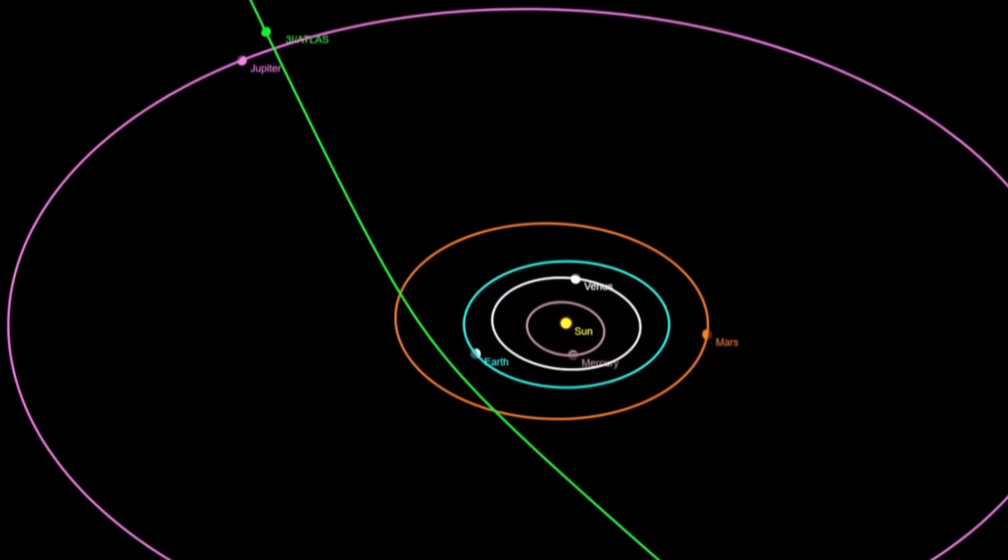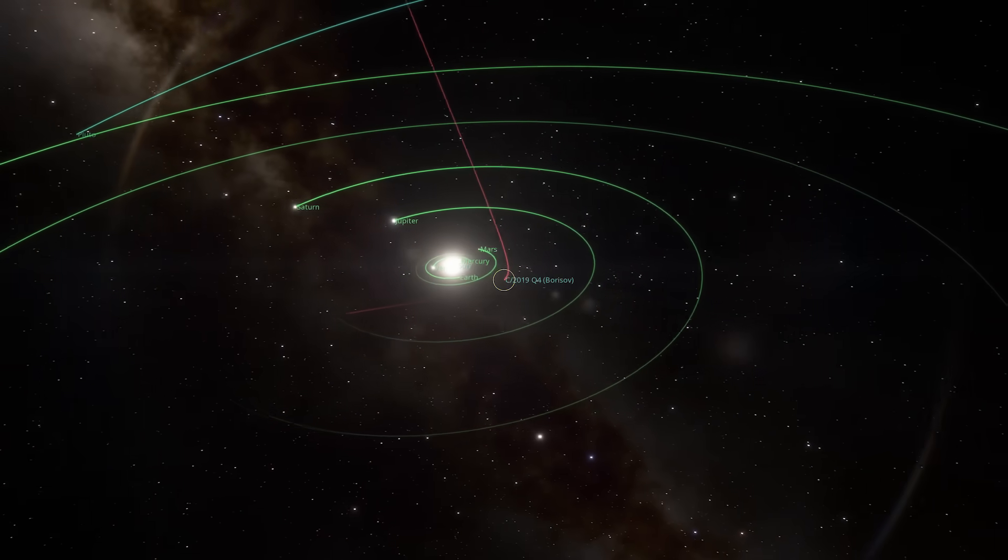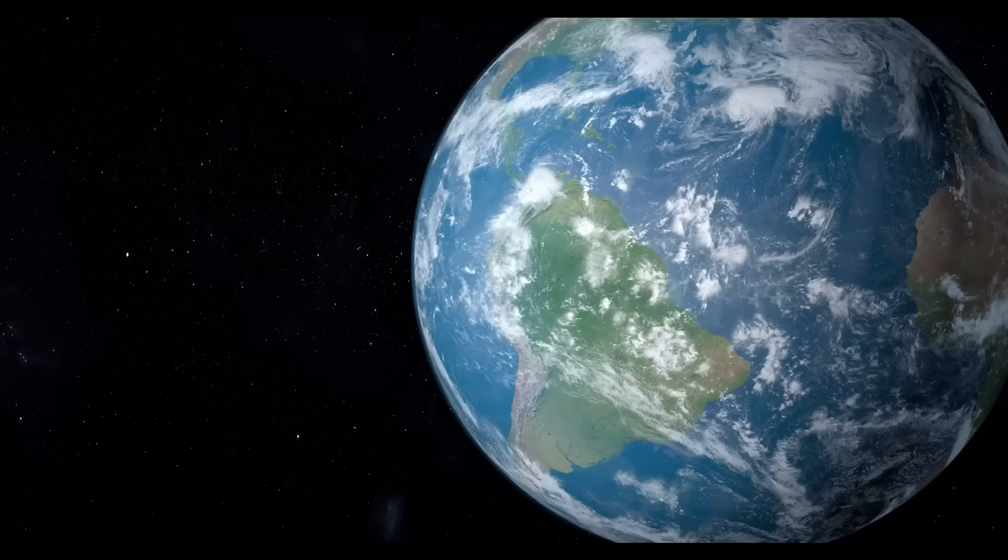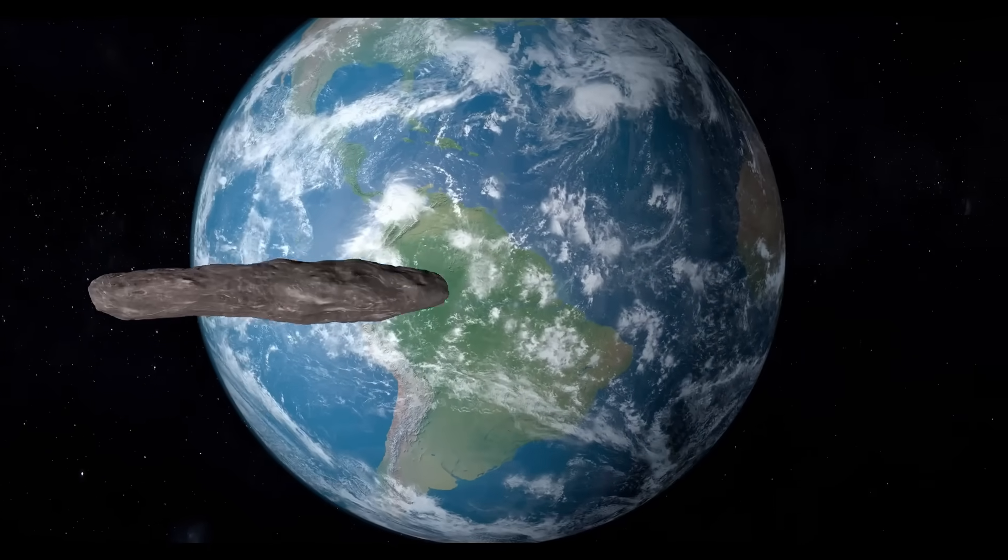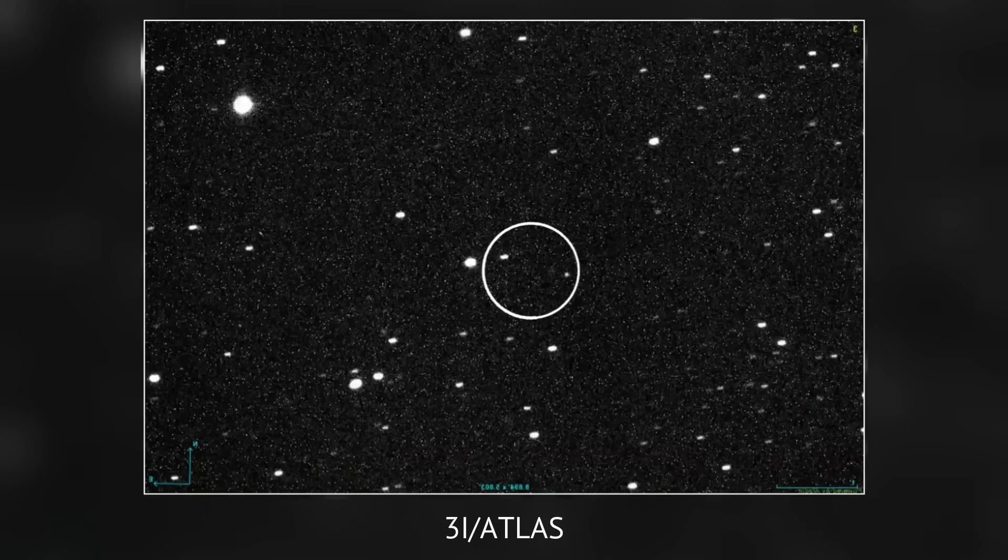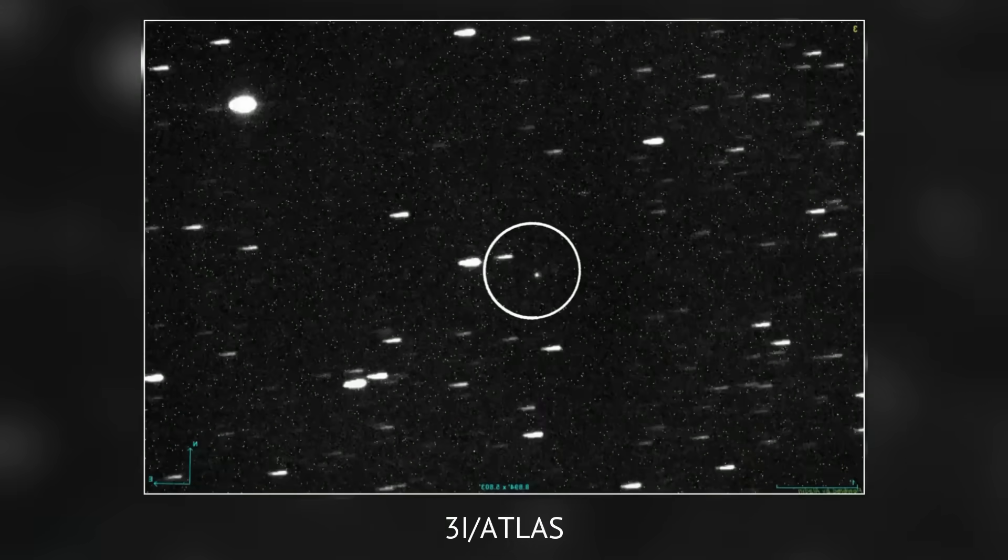The object is interstellar, the third of its kind, after comet 2I/Borisov in 2019 and Oumuamua in 2017. It's named 3I/Atlas, and early observations suggest that it may be an active comet.